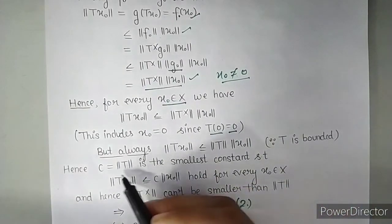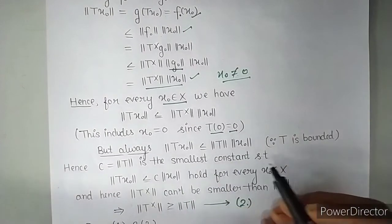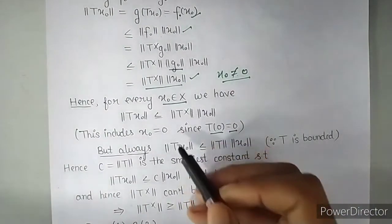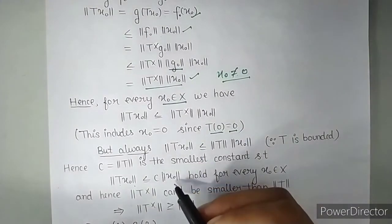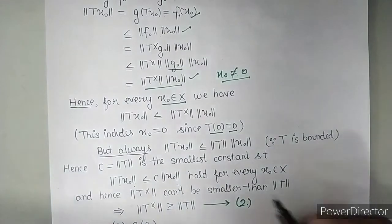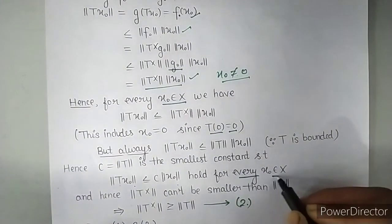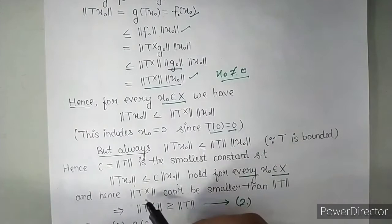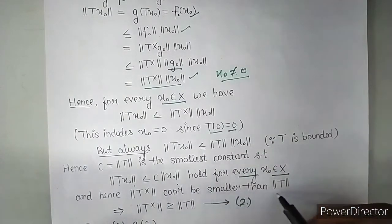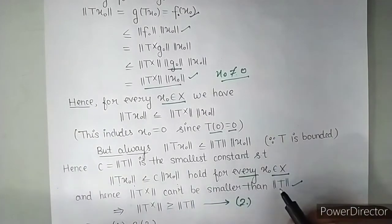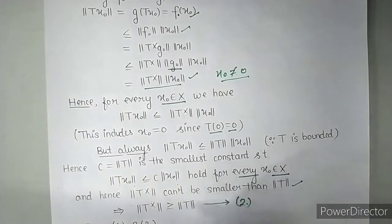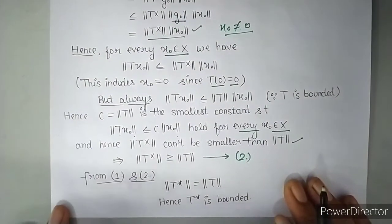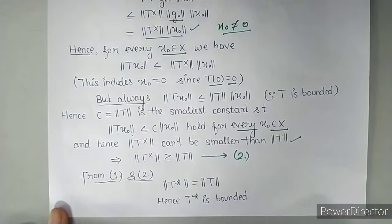So hence norm of T is the smallest constant such that, this will be the smallest constant, such that norm of TX0 is less than or equals to C times norm of X0, that holds for every X0 belonging to X. So hence norm of T star can't be smaller than norm of T. If this can't be smallest, then between these there will be a greater than sign. So norm of T star is greater than or equals to norm of T.